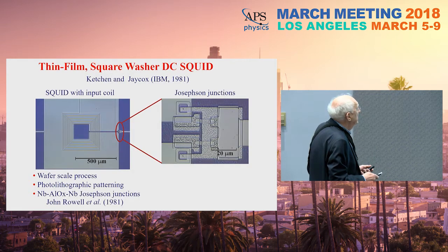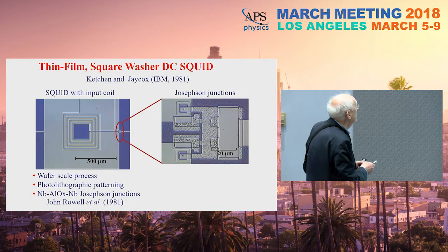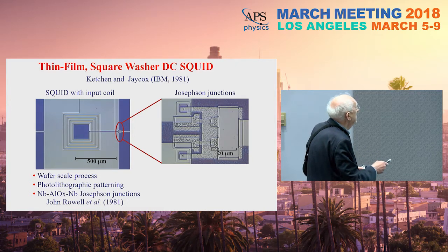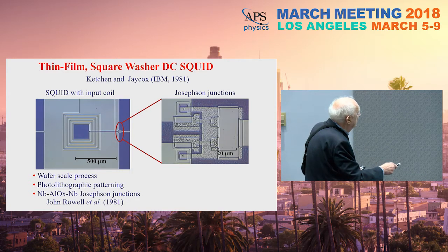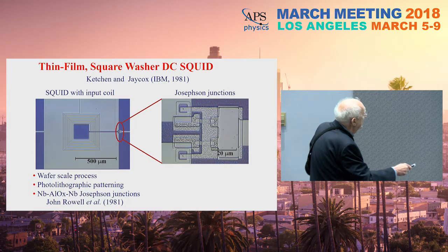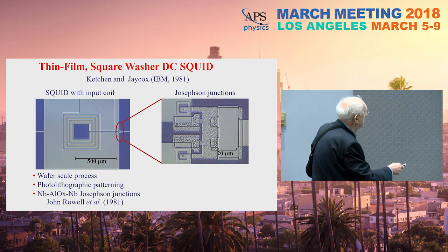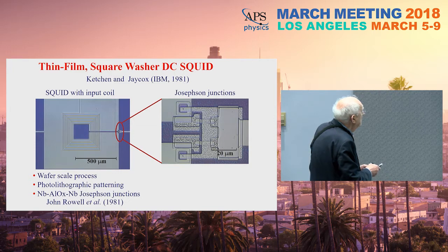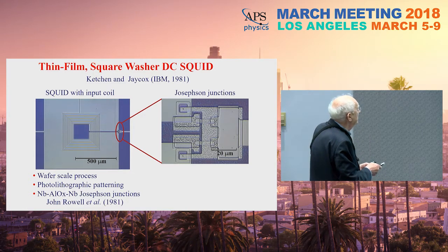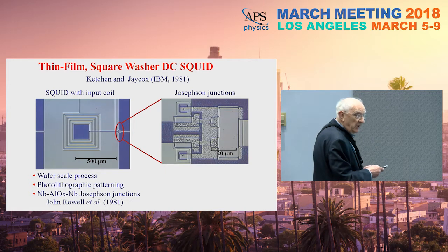SQUIDs are made today using thin films of superconductor. This early device was by Mark Ketchen, my former graduate student. The dark blue is a silicon chip on which a niobium film — the light blue — has been deposited, maybe a millimeter across. In the middle there's a hole, then a slit to the outside edge, and just outside that edge are two Josephson junctions connected by a loop. Passing a current from left to right flows through the junctions — that's your SQUID. On top, a thin niobium film is deposited, insulated electrically, and a current around this coil couples flux into the SQUID.